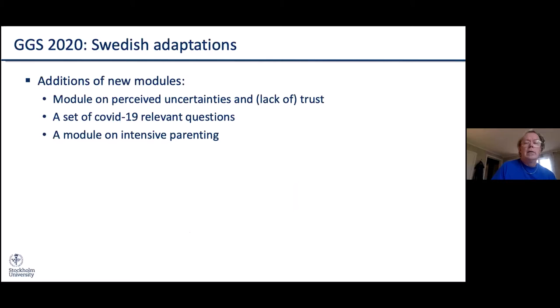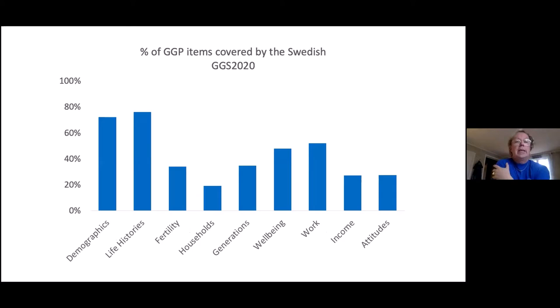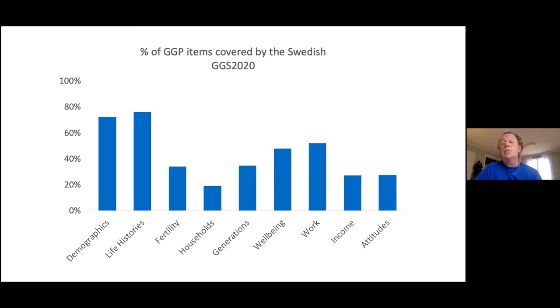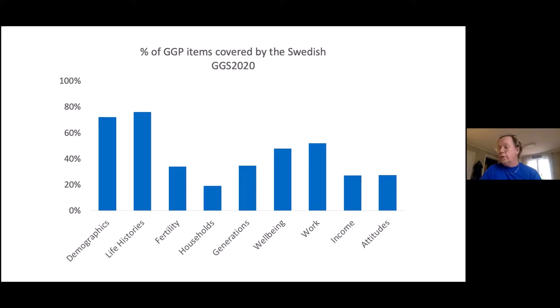Johan put together an estimation of how much we cut in the different sections of the GGS. It looks like we made drastic cuts, but in reality it was a few of those very large batteries with many similar questions. In the fertility section, we cut out questions related to the theory of planned behavior. In the household section, we cut a lot of questions on who does what in terms of household work. In the income section, we cut out questions on whether you can afford basic goods — entire batteries that were not so relevant for the Swedish context — all of which are available in the previous GGS.